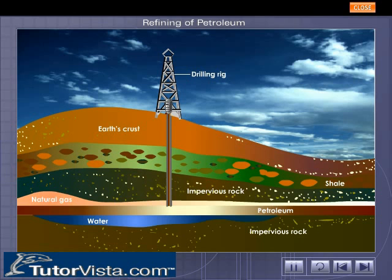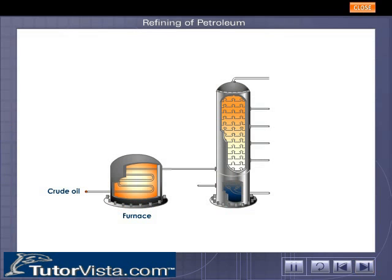by the process of fractional distillation. Fractional distillation of petroleum is done by using a tall fractionating column or fractionating tower, as shown here. Crude petroleum is heated to a temperature of about 400 degrees Celsius in a furnace, and the vapors thus formed are passed into a tall fractionating column from an inlet at its base.